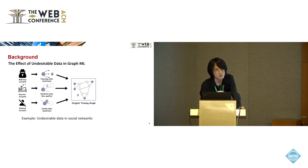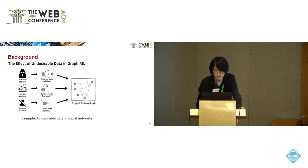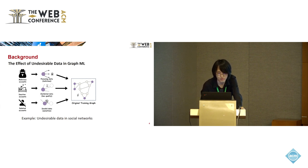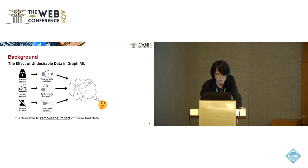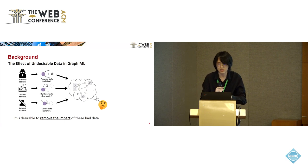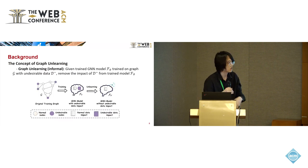Another problem lies in the sensitive data from deleted accounts. In some regulations, online service owners are responsible for removing the sensitive data of deleted accounts, and we must remove the impact of these sensitive data from trained graph machine learning models. Based on these three cases, we can find that it is highly desirable to remove the impact of some types of bad data from trained graph machine learning models. This has brought a new strand of research which is called graph unlearning.